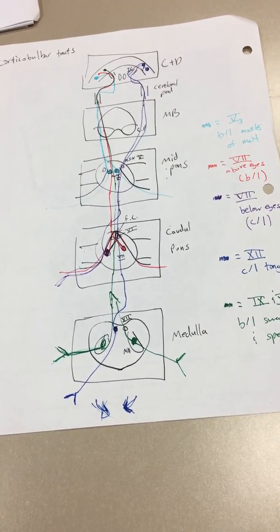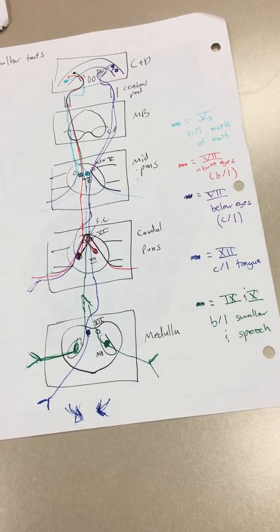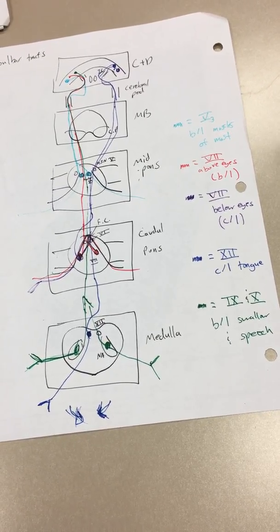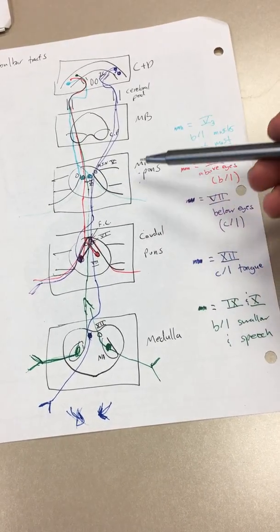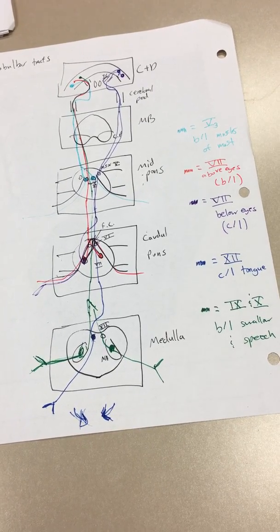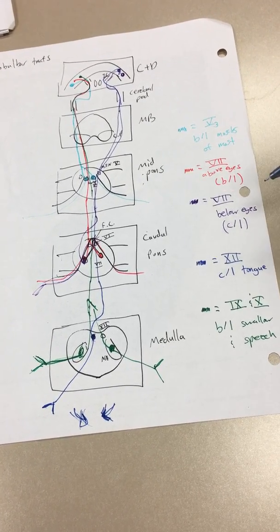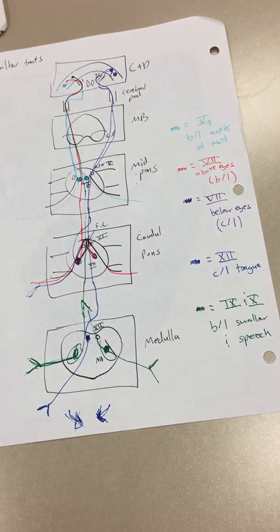Okay, so quick recap. V3, or mandibular branch of the trigeminal, is going to send bilateral innervation to the muscles of mastication through the mid-pons. Our facial nerve above the eyes is bilateral versus below the eyes is contralateral. Those will synapse within the caudal pons.